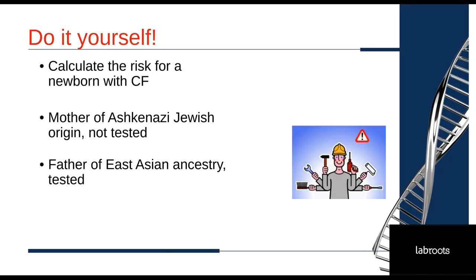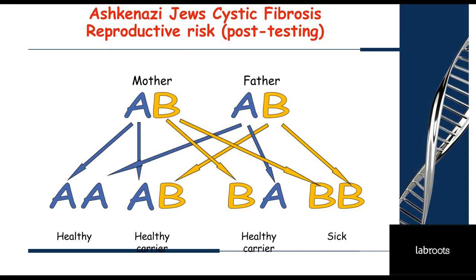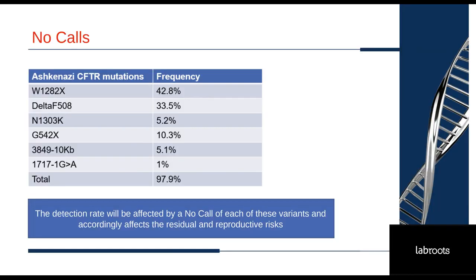Let's calculate a scenario ourselves: a newborn couple where the mother is of Ashkenazi Jewish origin and was not tested — her carrier probability remains 1 in 25. The father is of East Asian ancestry and was tested, giving him a residual risk of 1 in 203. The overall reproductive risk is 1 in 25 × 1 in 203 × 1/4 = 1 in 20,300.